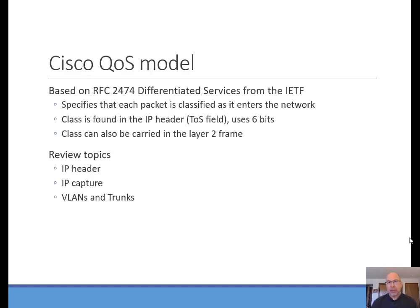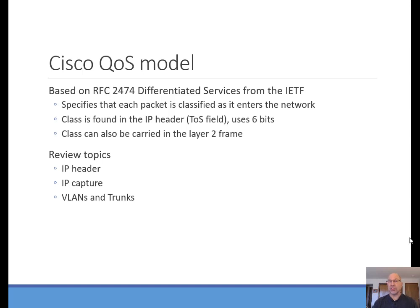We've been leading up to how we deal with quality of service. Our discussion is based on the Cisco QWAS model, which is based on RFC 2474 Differentiated Services from the Internet Engineering Task Force. The idea is that every packet entering the network is classified or labeled, and then you define a treatment for that packet or flow. We find these labels inside the IP header, and they can also be carried from the layer 2 frame up into the layer 3 IP header.